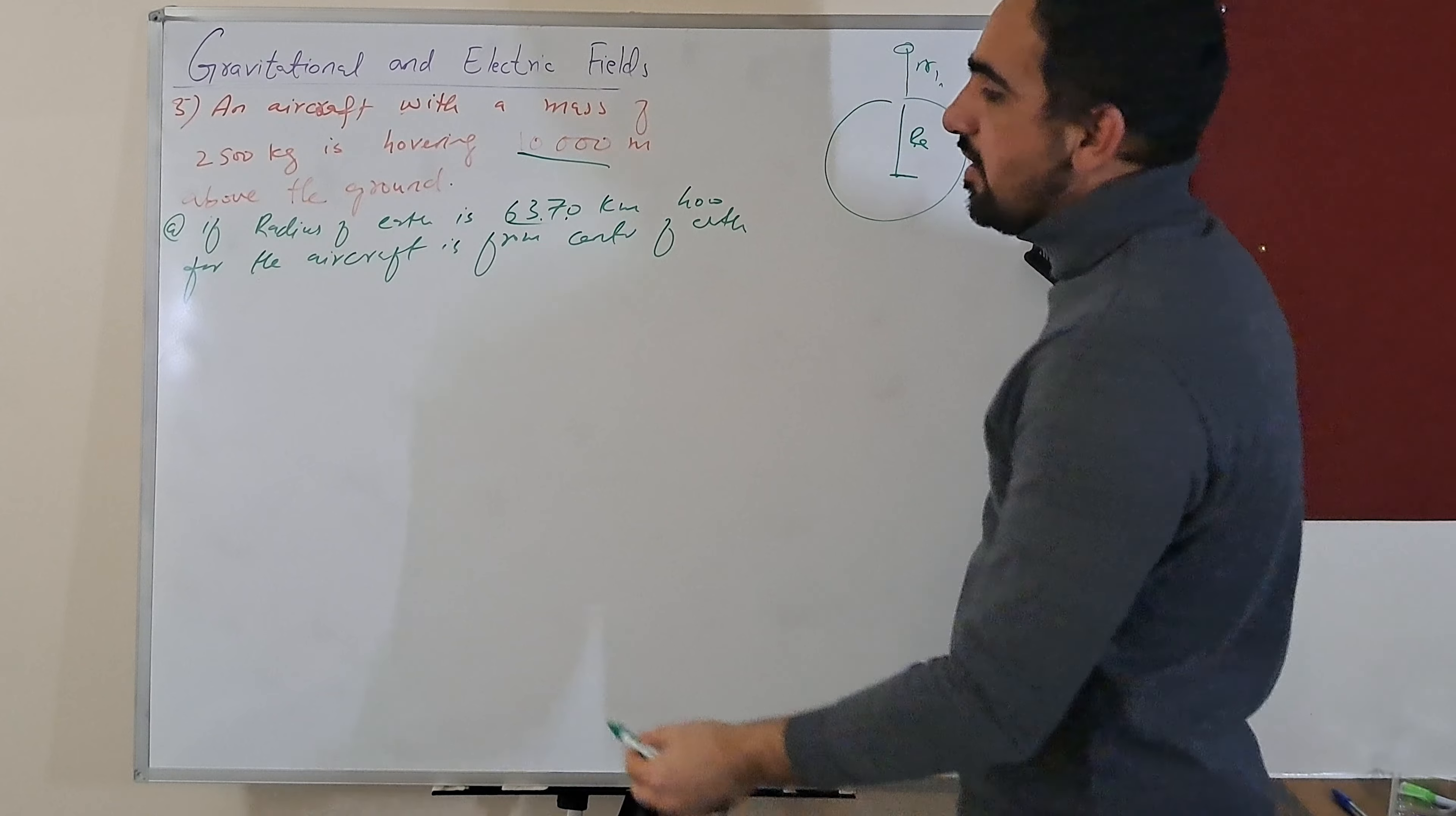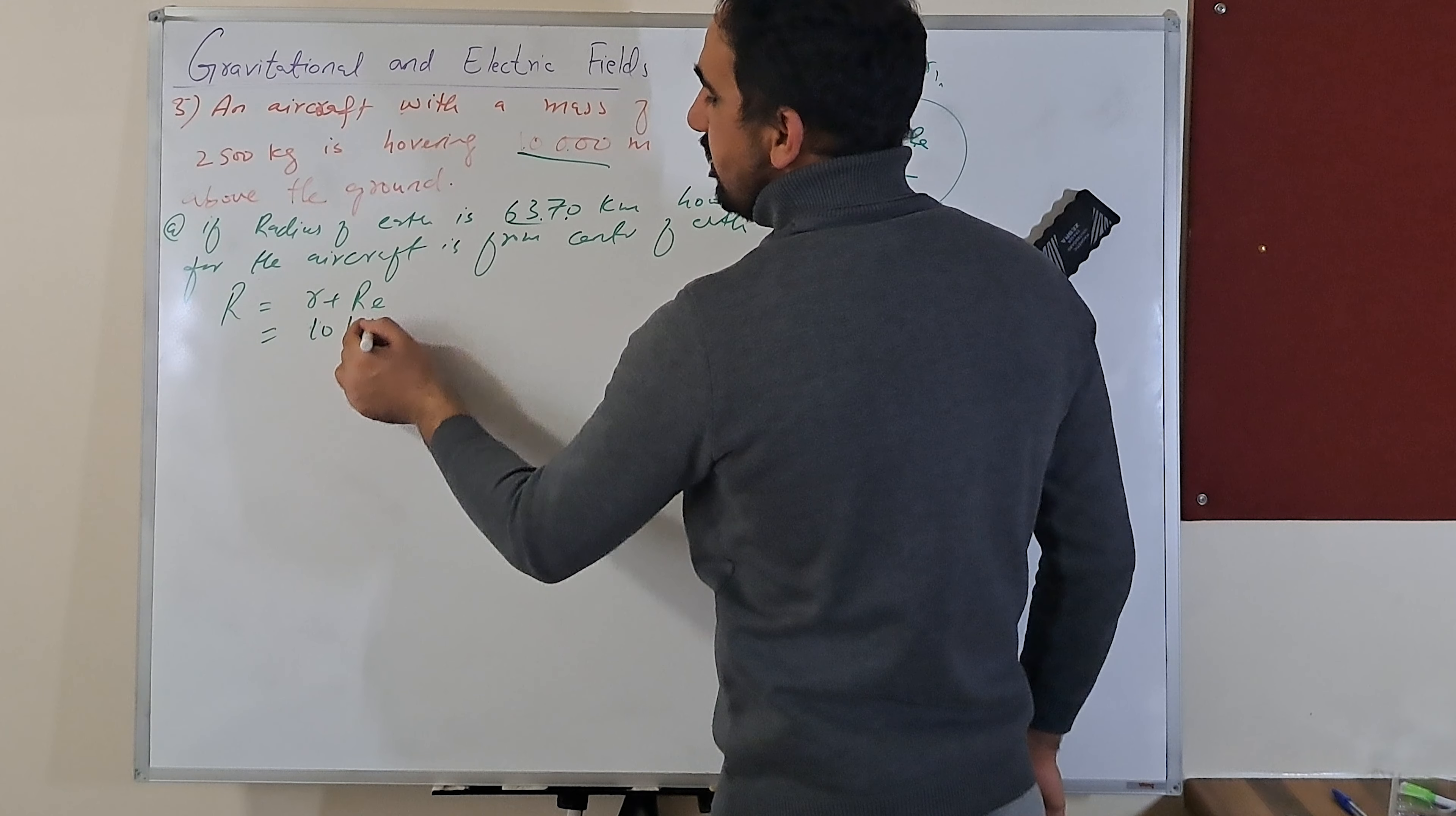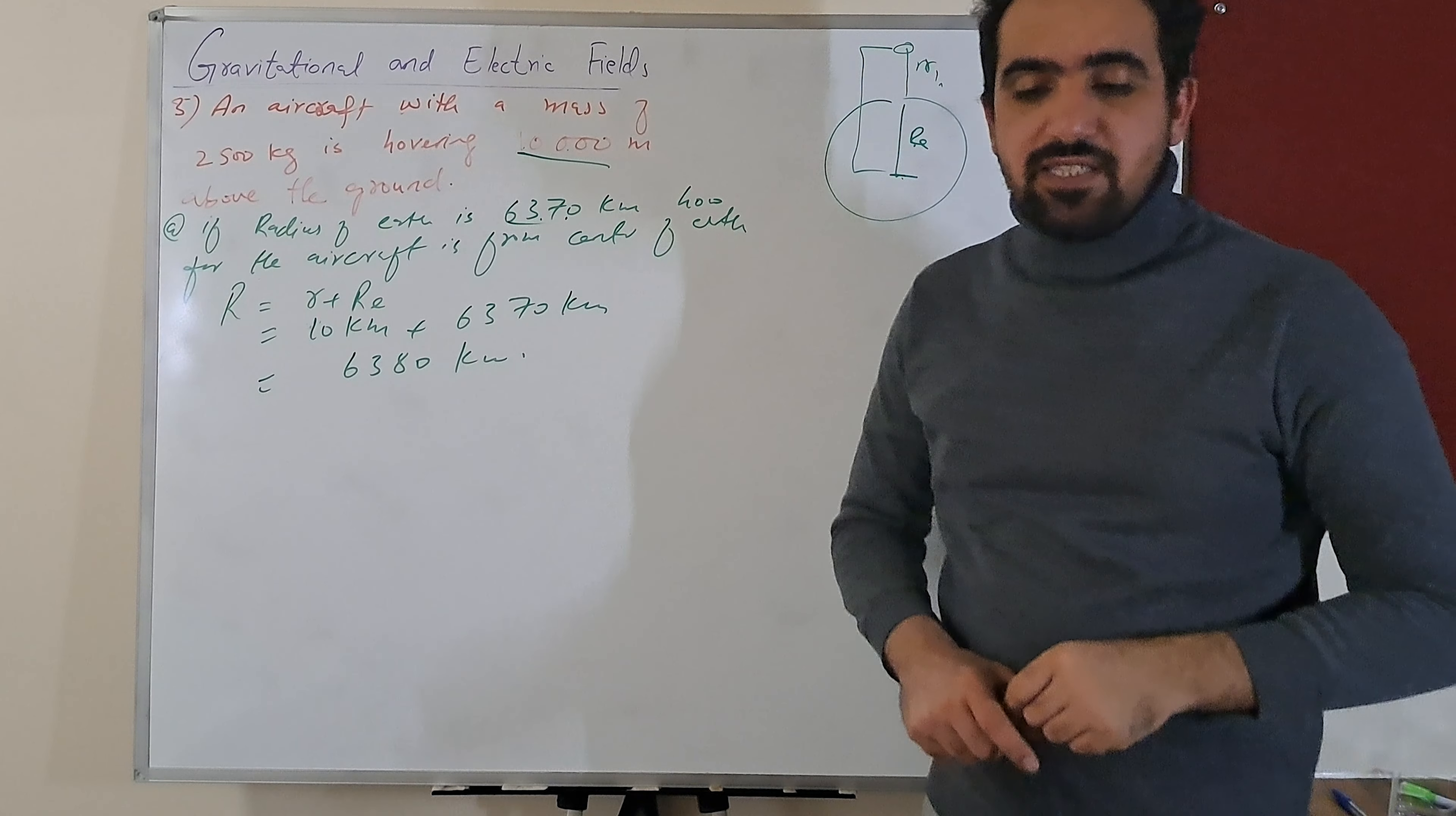So the total distance between aircraft and the center of Earth, let's say capital R, is equal to r plus radius of Earth. I can write this: 10,000 meters is 10 kilometers plus 6,370 kilometers. So what we get is 6,380 kilometers. That's the distance from the center of the Earth to the aeroplane or aircraft.